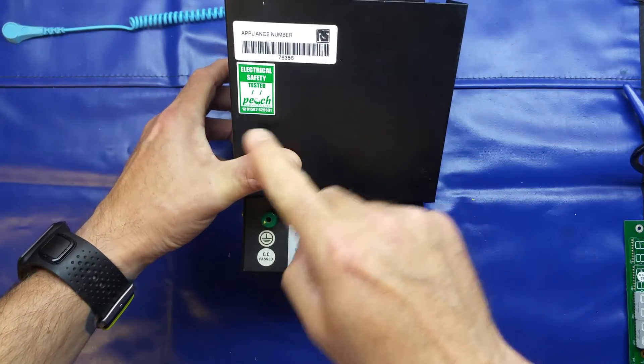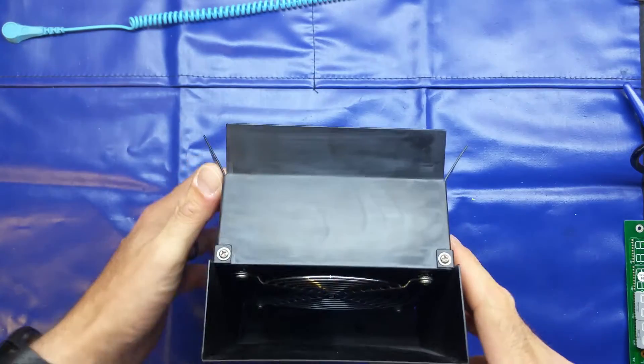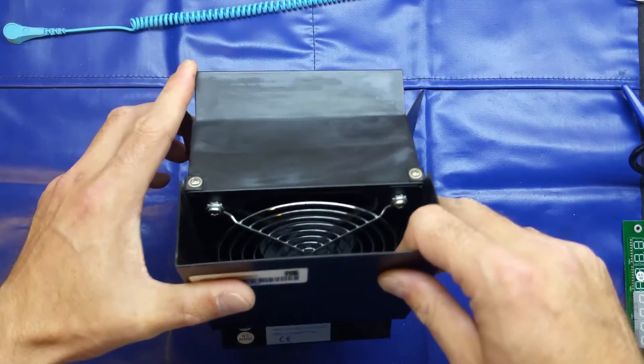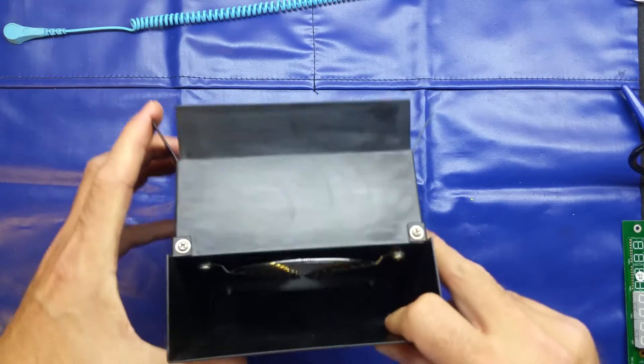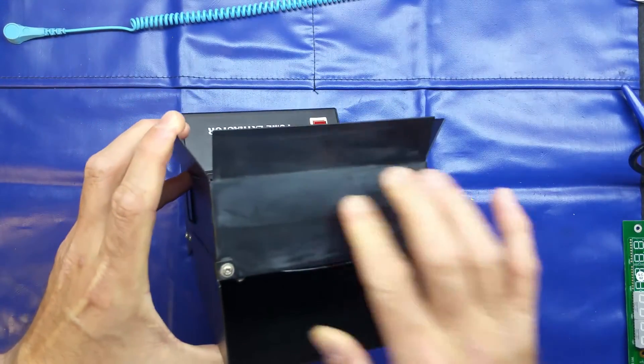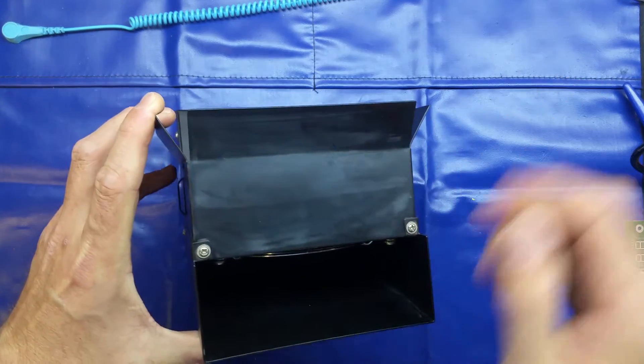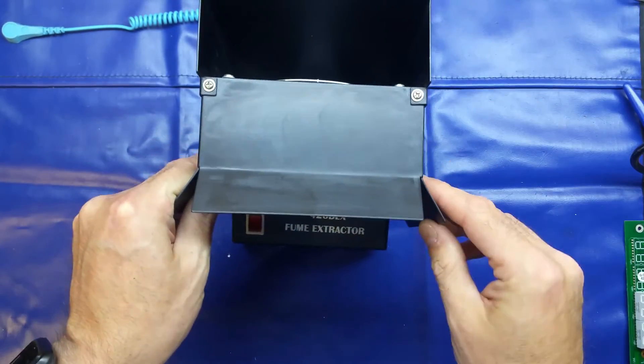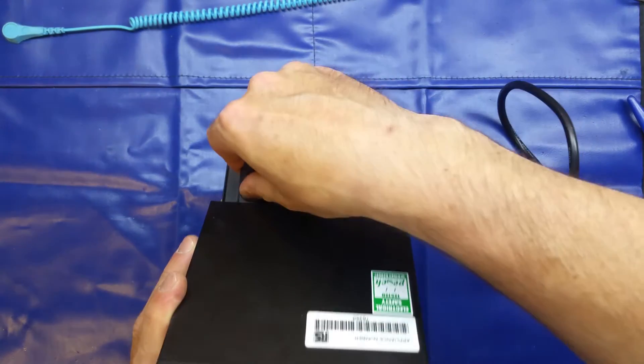There's some labels on there, electrical safety, RS component, appliance, whatever. You may have heard me talking about isopropyl alcohol in my previous video for cleaning stuff. I did give this a clean up, and it's slightly affected the paintwork, but it doesn't matter. Actually, if we plug it in, I'll give you a quick demonstration.